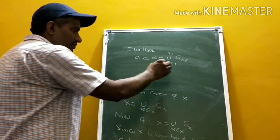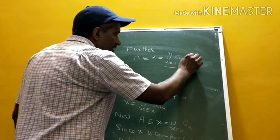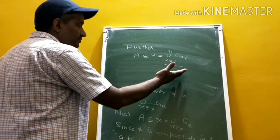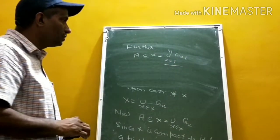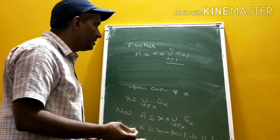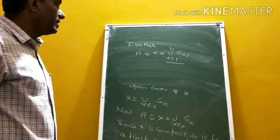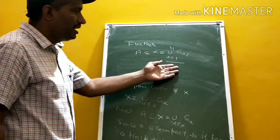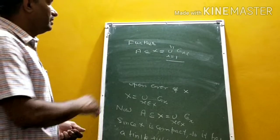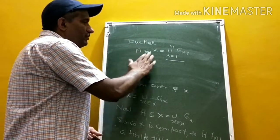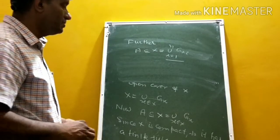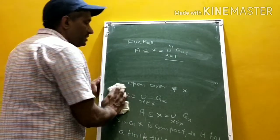Now we come to the next theorem. We saw that the union has N elements but A is an infinite subset — it cannot be true. So our assumption that every infinite subset A of X has no limit point is wrong. Hence, every compact space possesses Bolzano's property. Now we come to the next theorem.